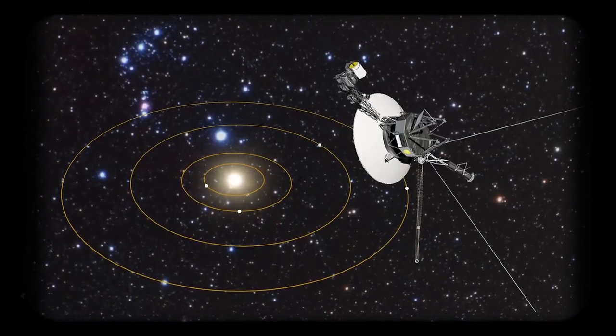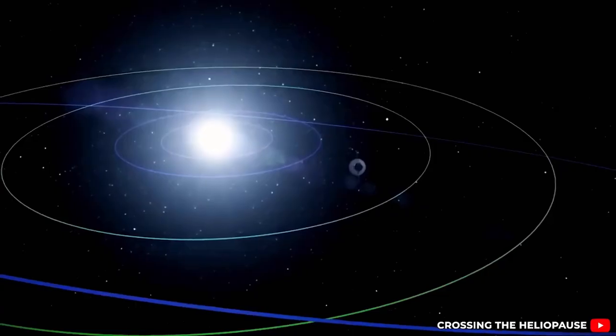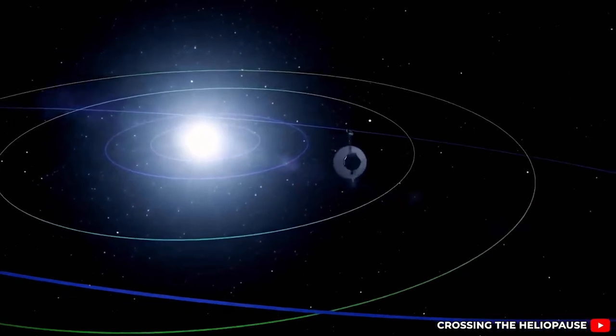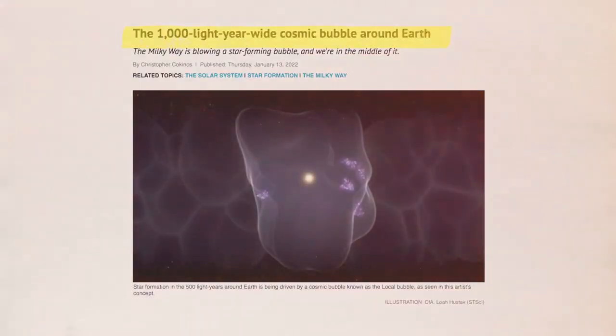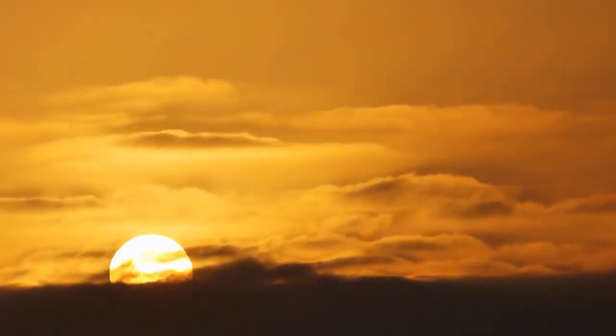Meanwhile, Voyager 2 detected a subtle flow of low-energy particles extending more than 100 million kilometers beyond the heliopause. As Voyager 1 approached the boundary, the outgoing solar wind slowed dramatically, creating an eerie limbo-like state.